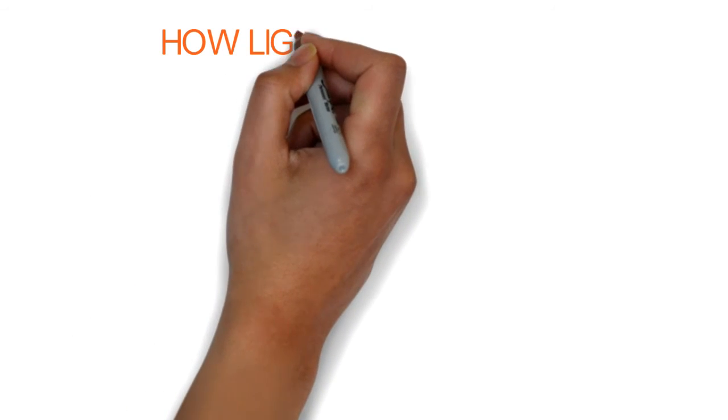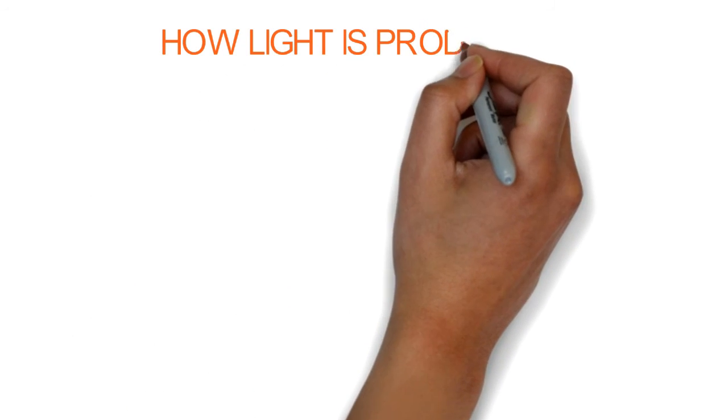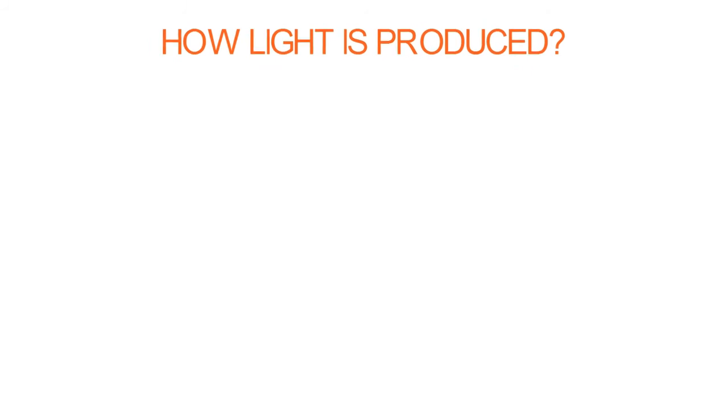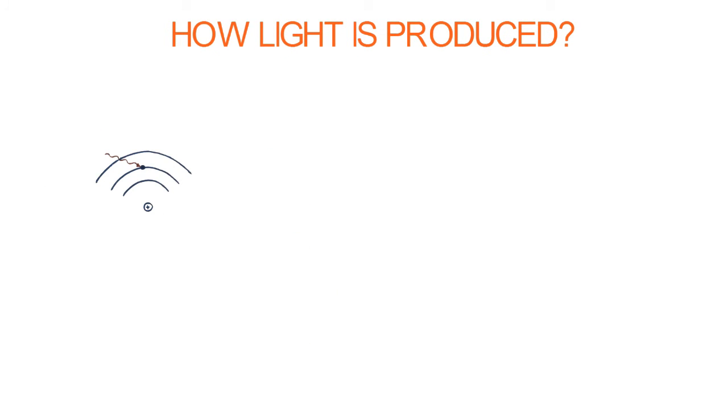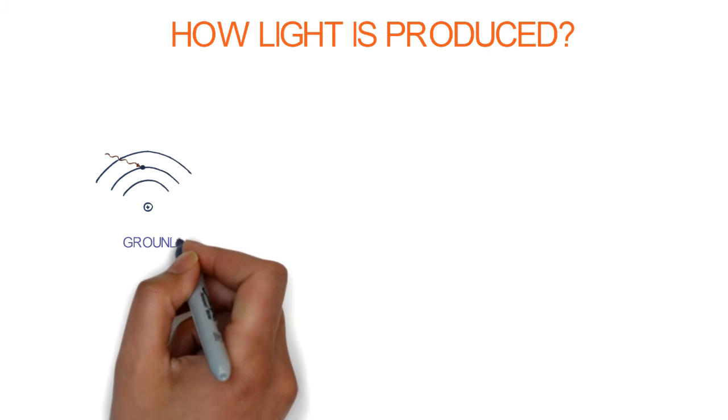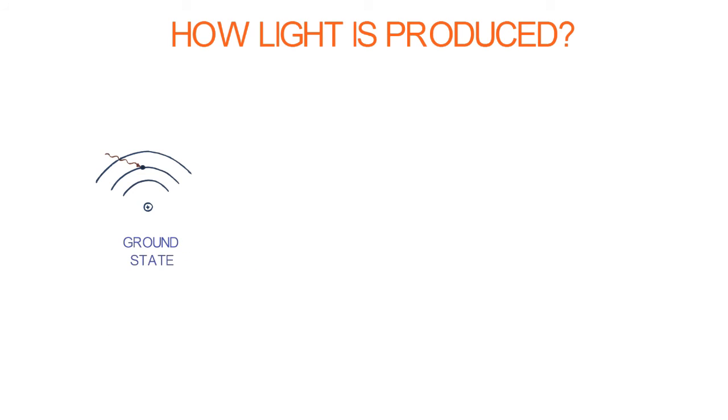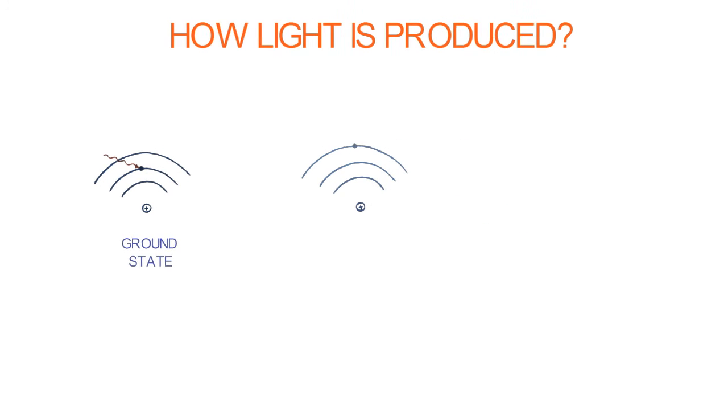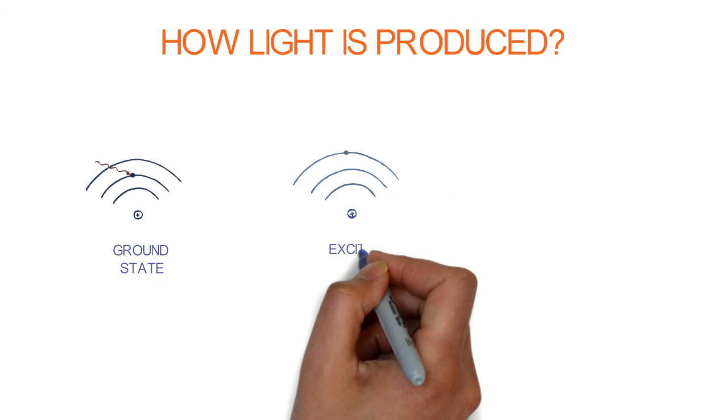Now, a question arises: how is light produced? In the ground state, the outer electrons of atoms absorb energy, maybe in the form of light, heat, or due to collisions, and go to the excited state. The electron in the excited state is very unstable and comes back to the ground state, giving the excess energy in the form of light.